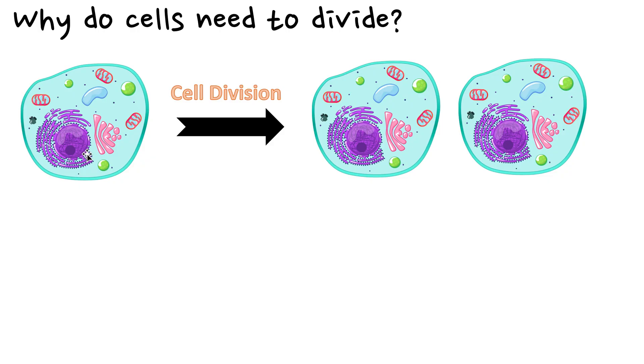That must mean that before this cell divided, it duplicated its DNA so that it replicated its DNA so that when it divided, each of the daughter cells or the baby cells now have a normal amount of DNA. So that's very important. That's what you need to understand.